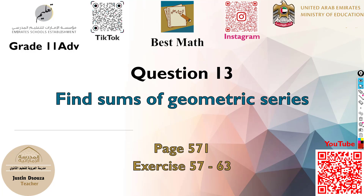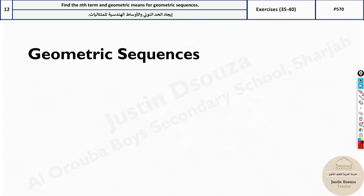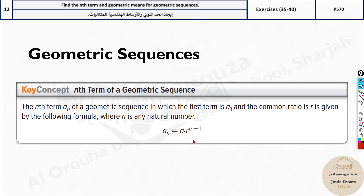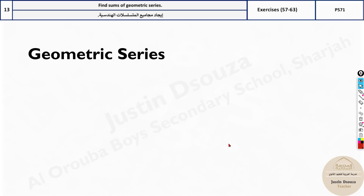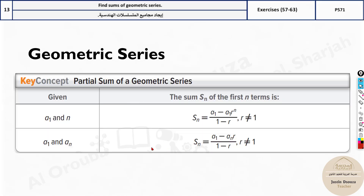Question 13 is about geometric sums — we have to add geometric sequences. The formulas are given here. The geometric sequence formula we just saw in the last problem is a_n equals the first term times the common ratio r to the power n minus 1. The geometric series formula is given by two formulas.